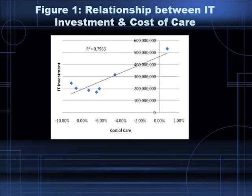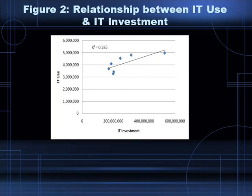In this figure, the relationship between IT use and IT investment is analyzed. Since R-squared is 0.58, halfway between 0 and positive 1, we can say that a moderate relationship exists between IT use and IT investment.